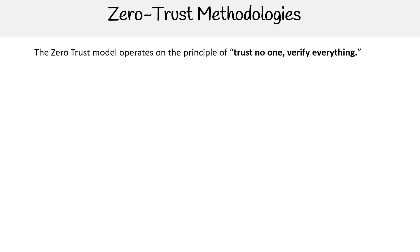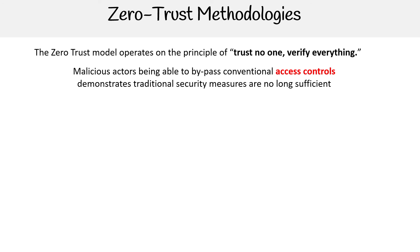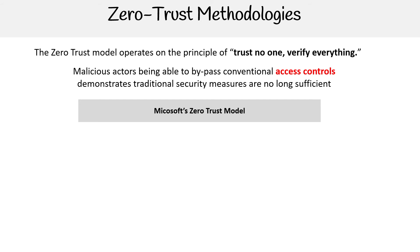The zero trust model operates on the principles of trust no one and verify everything. Malicious actors are being able to bypass conventional access controls, and traditional security measures are no longer sufficient — we need to come up with a new way to protect ourselves. That's where Microsoft has come up with their version called the Microsoft Zero Trust model.